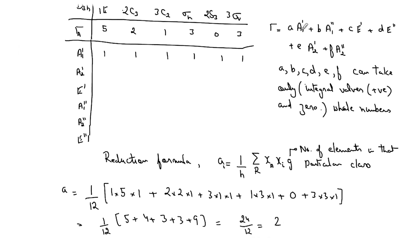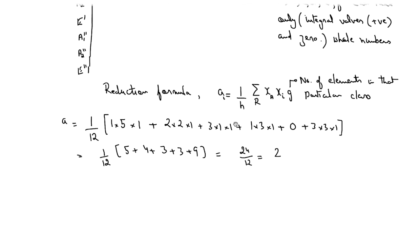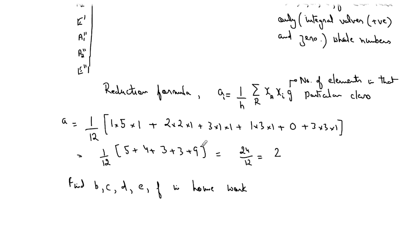So A1' will appear twice in this reducible representation. Similarly, the rest of the coefficients can be found. I will leave that to you — find B, C, D, E, F as homework. This course is all about calculation, so it is better to do it by hand. Speed will also matter in the exam, so practice is essential. It is a simple maths problem, so you should be able to practice it.